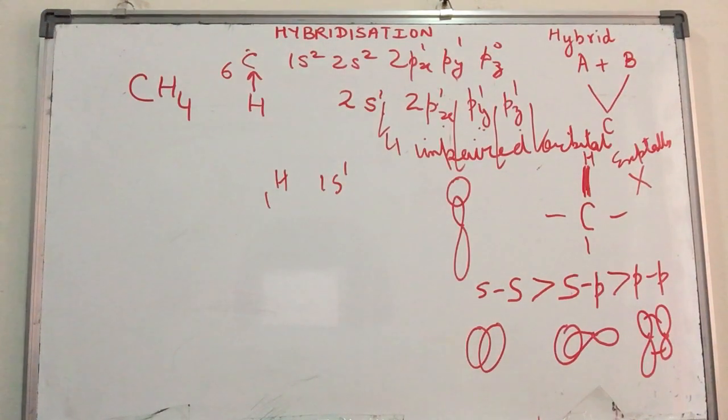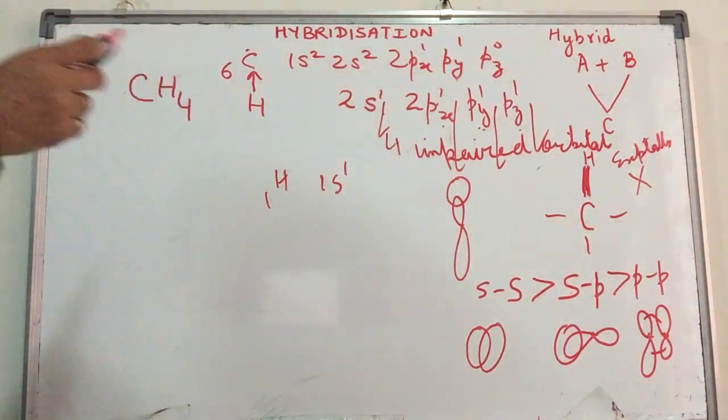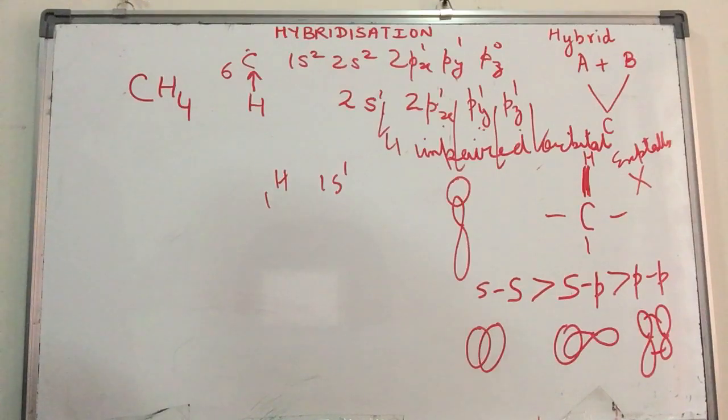You need the same amount of energy to break any CH bond, whichever bond you're talking about. How do we explain this? This has been explained on the basis of hybridization.